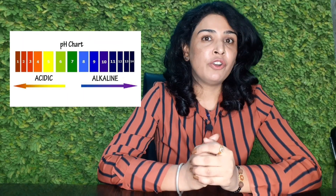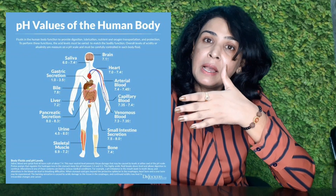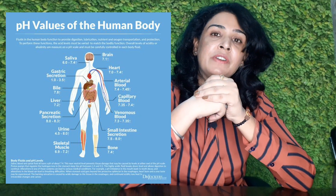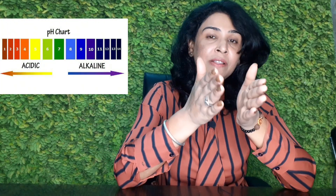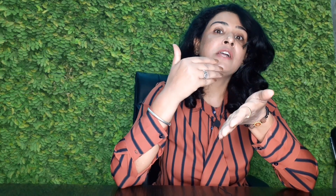So today's topic is the importance of alkaline diet to get a disease-free life. Every substance has a pH level. pH stands for the potential of hydrogen, and the pH scale ranges from 0 to 14 — whether it's soil, the ocean, or the human body. Different parts of the body have different pH levels: blood has a different pH, stomach has a different pH, tears have a different pH, and sweat has a different pH. On the scale, 0 to 7 is acidic, and 7 to 14 is alkaline.